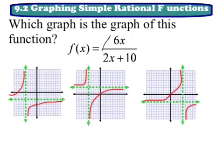my horizontal asymptote is going to be 6 over 2. So y equals 6 over 2, well, that's going to be 3. So that's my horizontal asymptote.